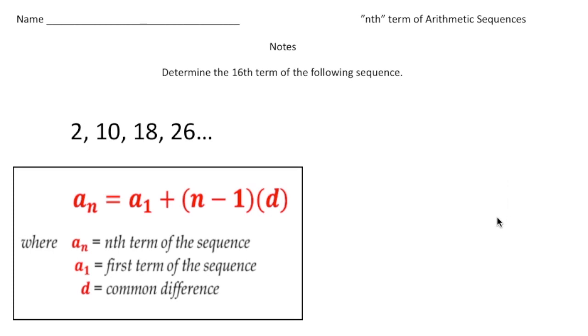Here we have a sequence: 2, 10, 18, and 26. By now you can probably figure out that the common difference of this is plus 8, so plus 8, plus 8, and plus 8.